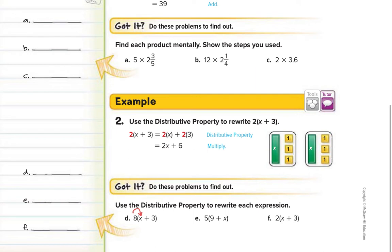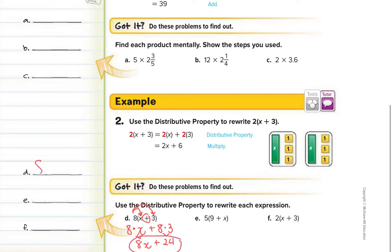We're going to distribute the 8 to the x — that means to multiply them. Then distribute the 8 to the 3 — again, that means multiply them. Whatever operation we have in the middle, we bring down, so this is addition. Now simplify: 8 times x is just 8x, plus 8 times 3 is 24. We can't add something with an x to something without an x, so our final answer is 8x plus 24.